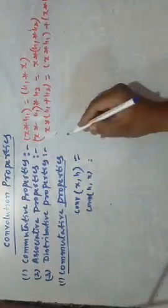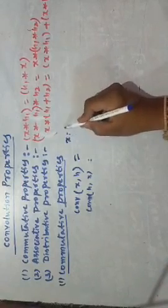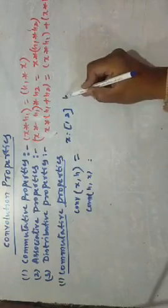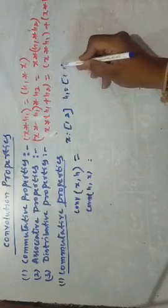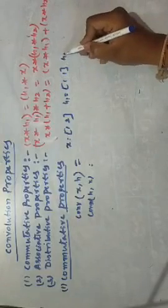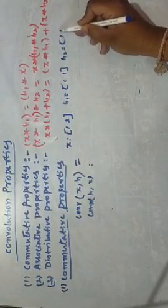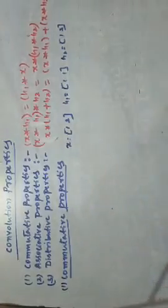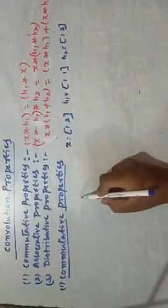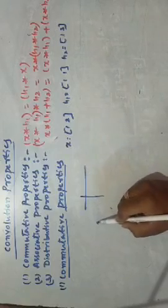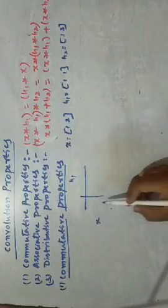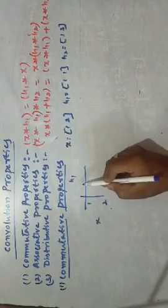For theoretical purposes, I will take, for the sake of simplicity, only two numbers. X is equal to 1, 2. H1 is equal to 1, 1. And H2 is equal to 1, 3. For the commutative property, only two variables are enough. First, in matrix form, I will write down: this is X and this is H1. The value of X is 1, 2. The value of H1 is 1, 1.